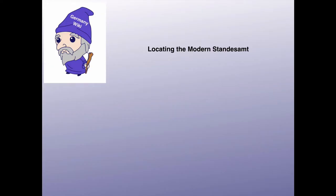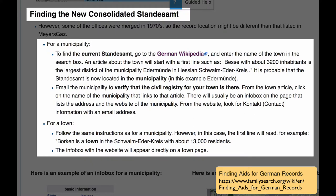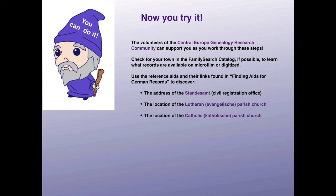The Finding Aids for German Records article gives you step-by-step instructions on how to find out where the current Standesamt is today. Now you try it. Remember that the volunteers of the Central Europe Genealogy Research Community can support you as you work through these steps if you find them confusing. Check for your town in the FamilySearch Catalog to learn what records are available on microfilm or digitized. Use the reference aids and their links found in Finding Aids for German Records to discover the address of the Standesamt, the location of the Lutheran parish church, and the location of the Catholic parish church for your town in Germany.